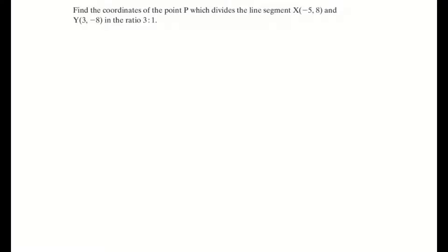So this question is saying find the coordinates of the point P, which divides the line segment X and Y in the ratio 3 is to 1. So before we go filling in any formula, best thing to do is to sketch what you're given. This can help us visualize the question in a little bit more detail.